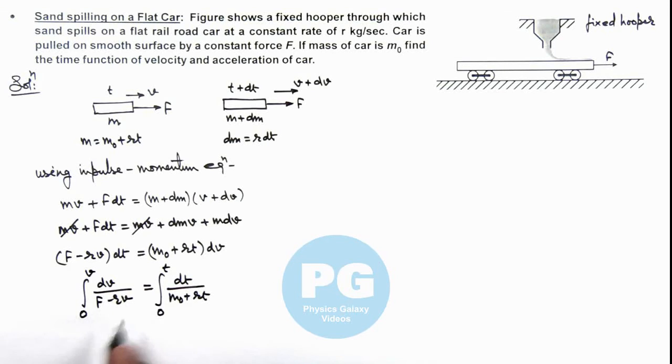On integrating this gives us minus 1 by r ln of (F minus rv) divided by F equals 1 by r ln of (m₀ plus rt) by m₀. I have also substituted the limits here. R gets cancelled out.